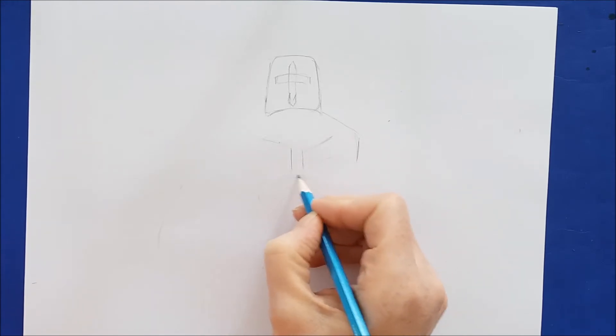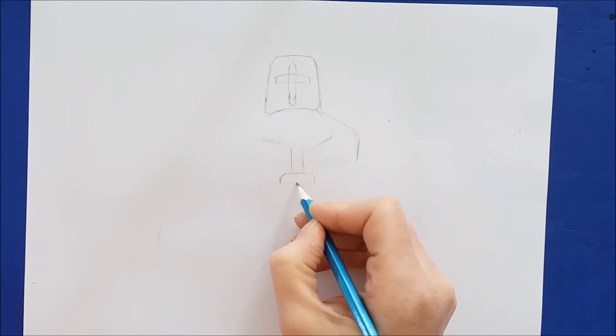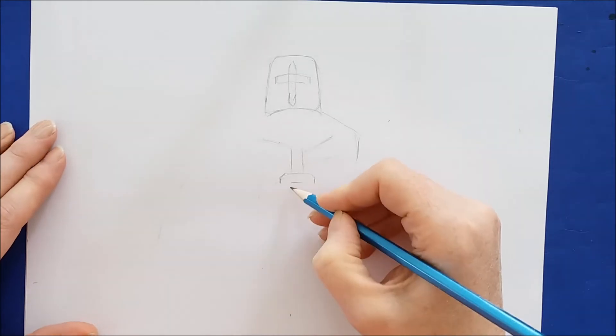These two downward lines are the pommel of the knight's sword, and I'll draw a horizontal line with rounded edges right below it for the hilt of the sword.